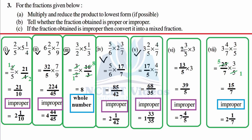Sixth part: 5 times 10 is 50 plus 3 is 13 over 5, times 3 as it is. 13 times 3 is 39 over 5 — it is improper. 5 sevens are 35, remainder 4, giving 7 and 4 over 5 as the mixed fraction. Last part: 7 threes are 21 plus 4 is 25 over 7.